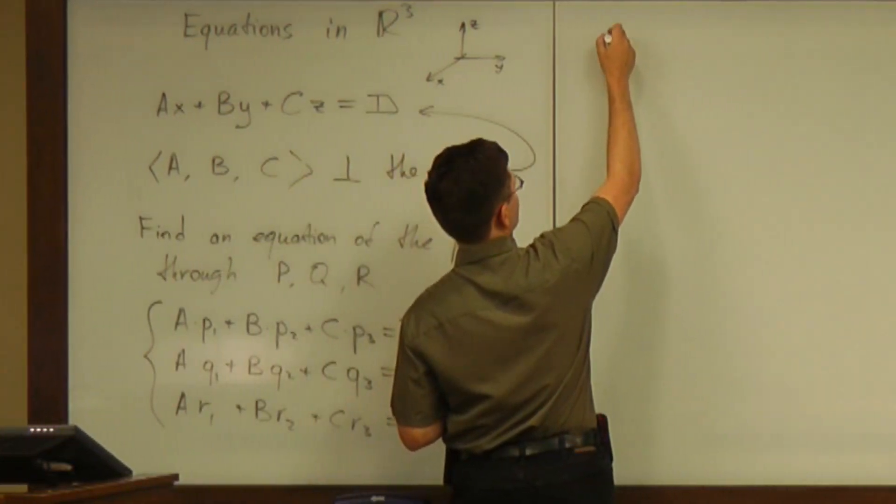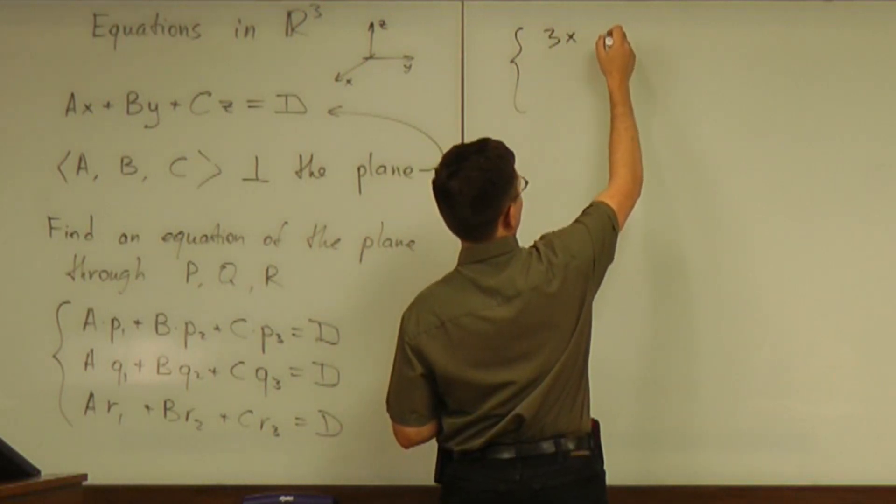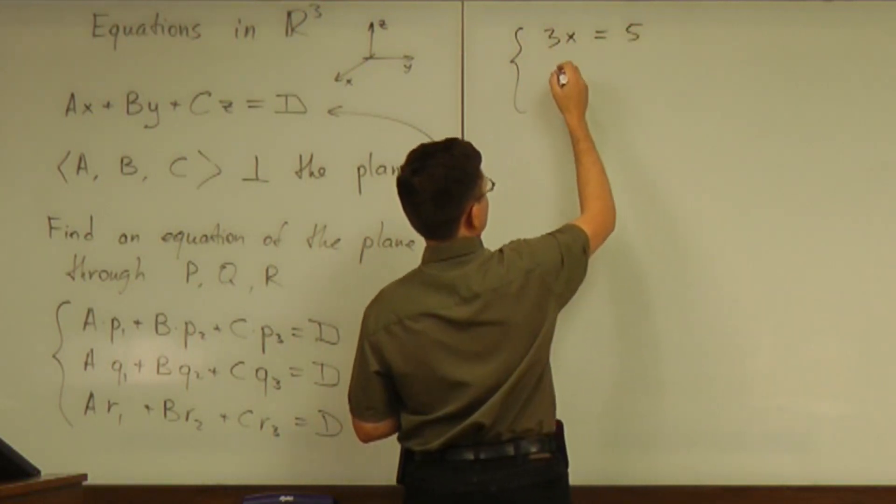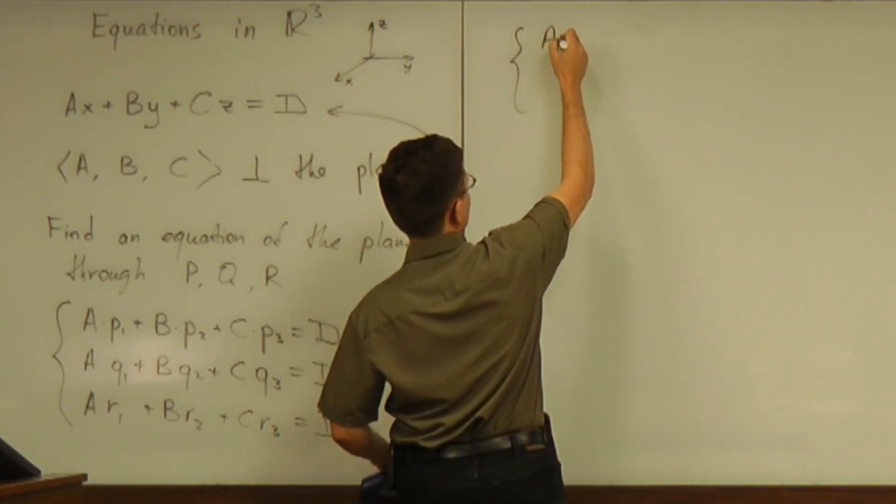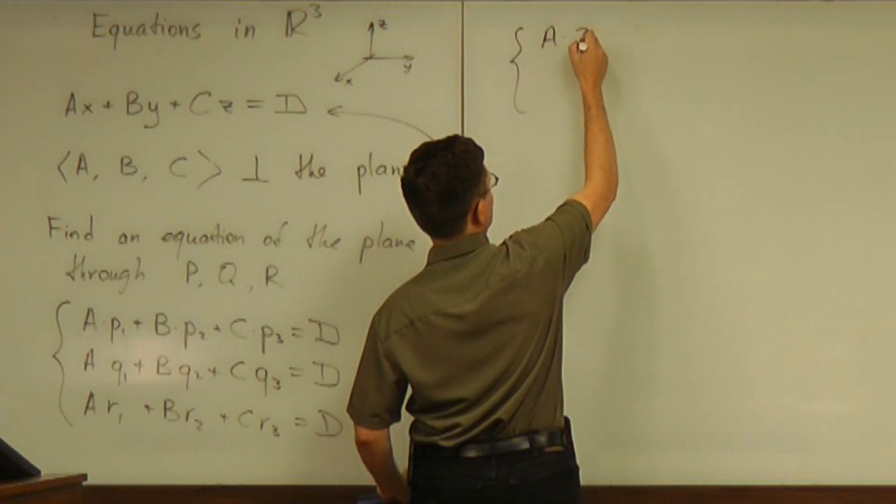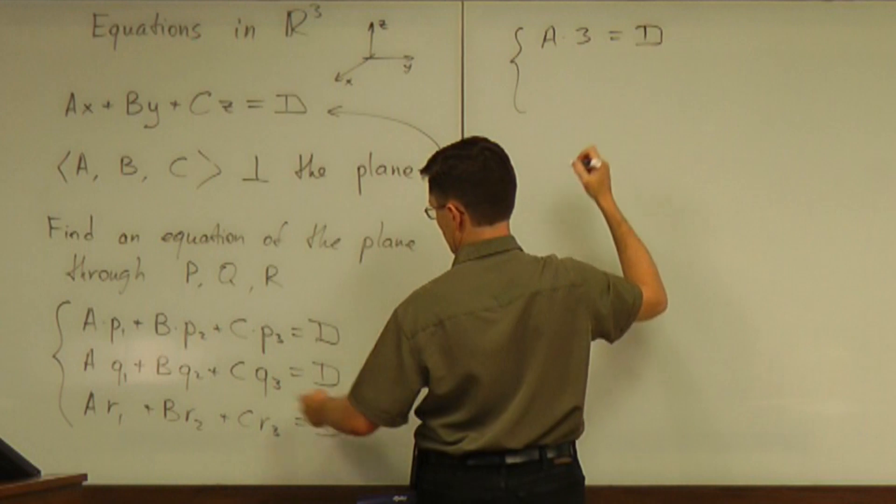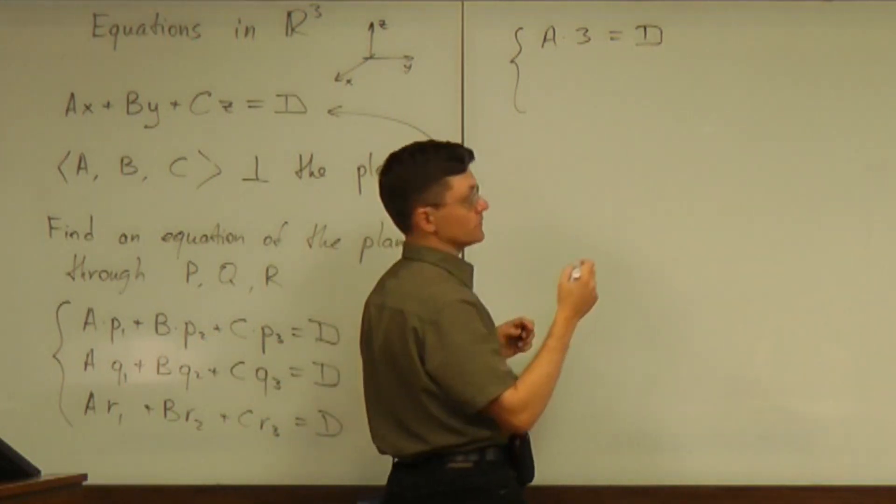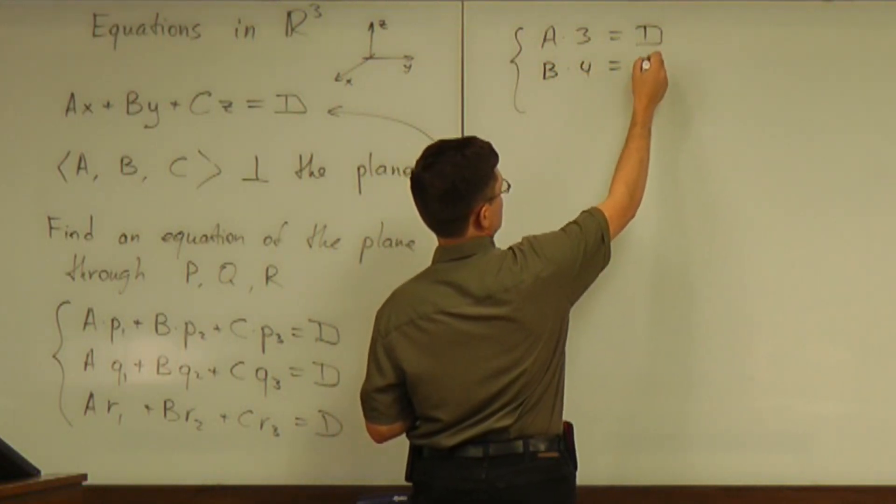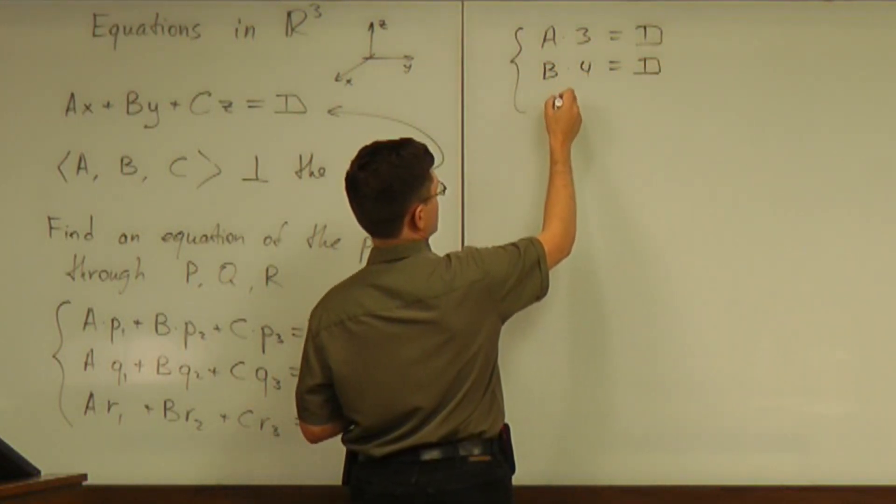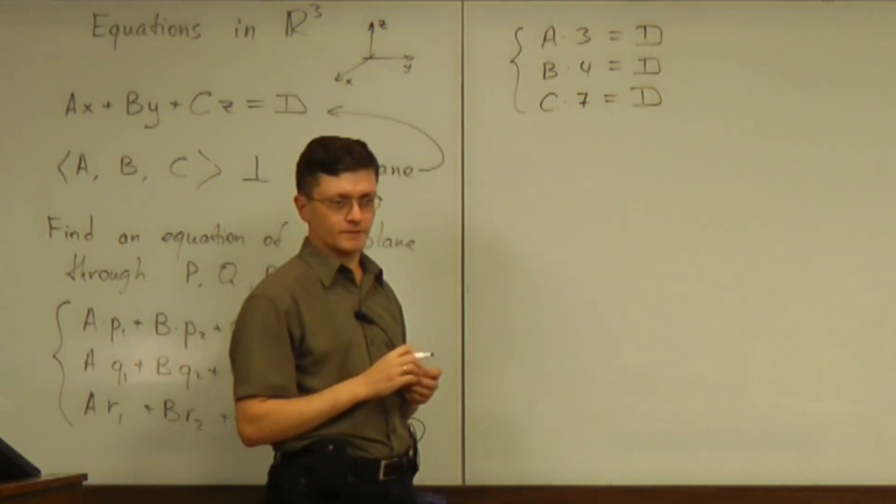So let me give you an example of a system. A times three equals D, just because P2, P3 equal to zero. B times four also equals D. And C times seven also equals D. Can you solve this system of equations?